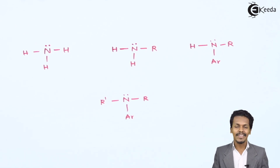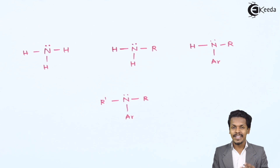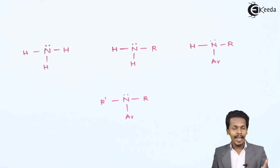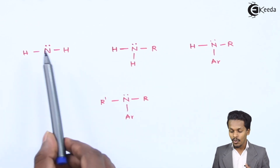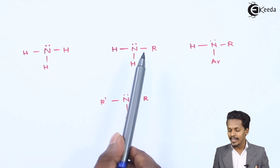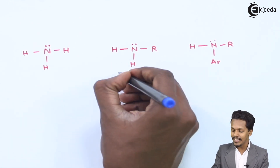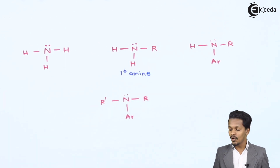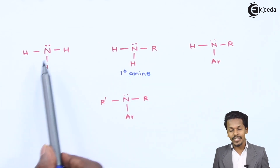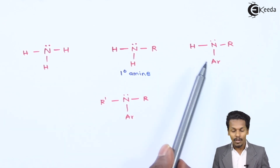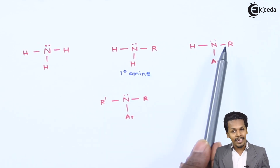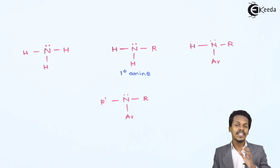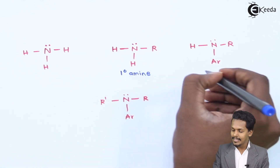Amines are classified into four types: primary, secondary, tertiary, and quaternary. When only one hydrogen atom of ammonia is replaced by an alkyl or aryl group, it is known as a primary amine. When two hydrogen atoms of ammonia are replaced by alkyl or aryl groups — both can be alkyl, both aryl, or one alkyl and one aryl — this is named a secondary amine.